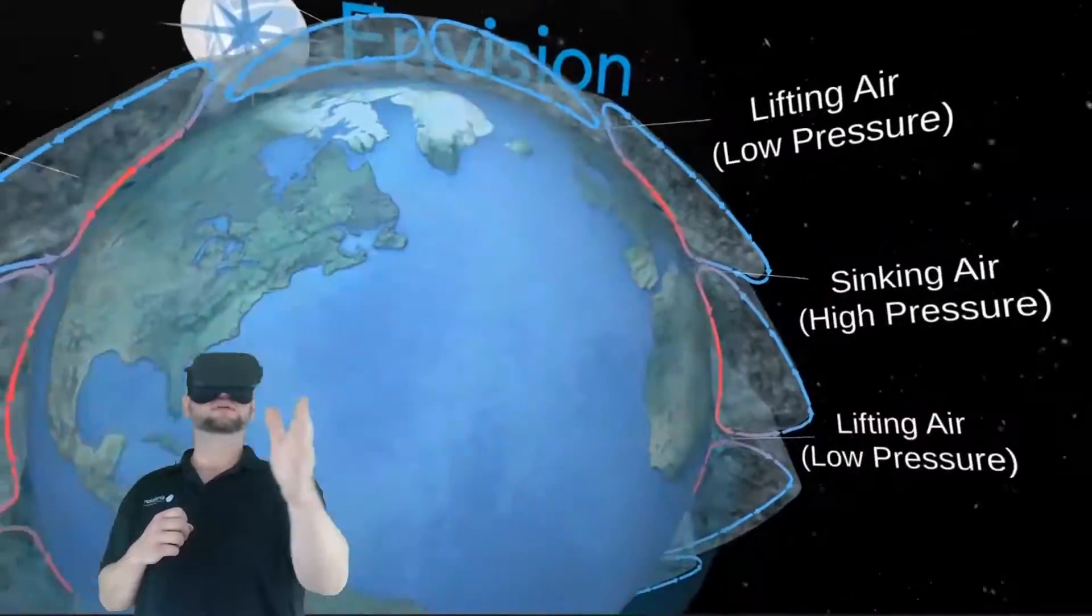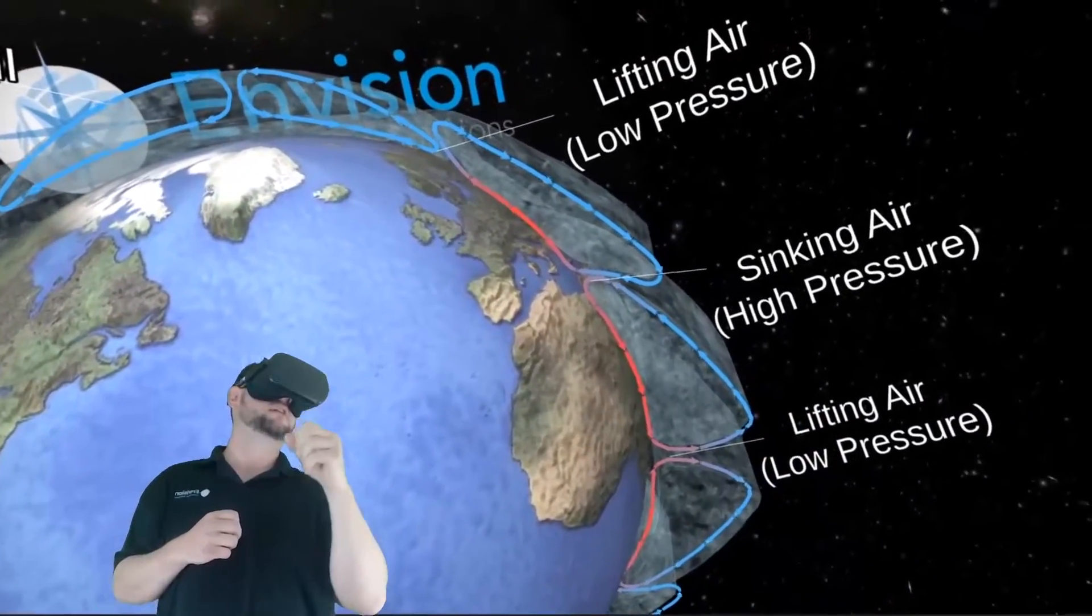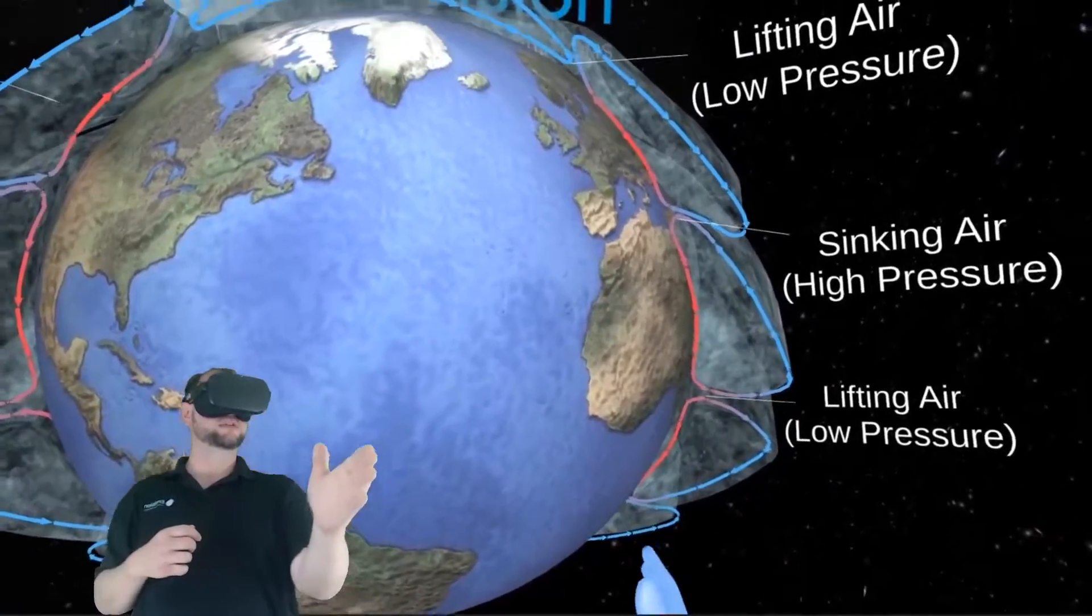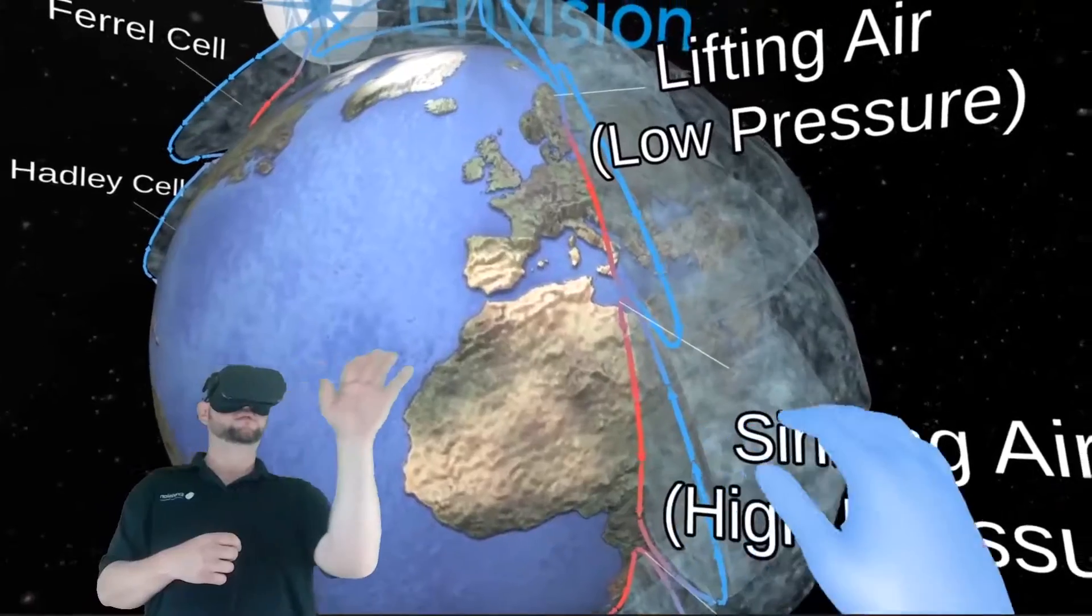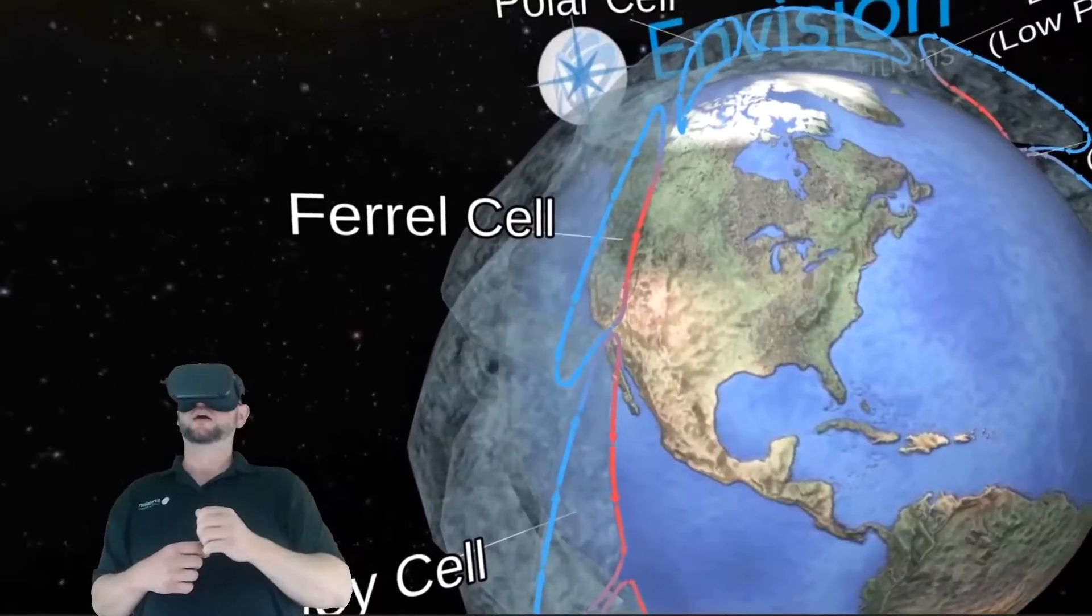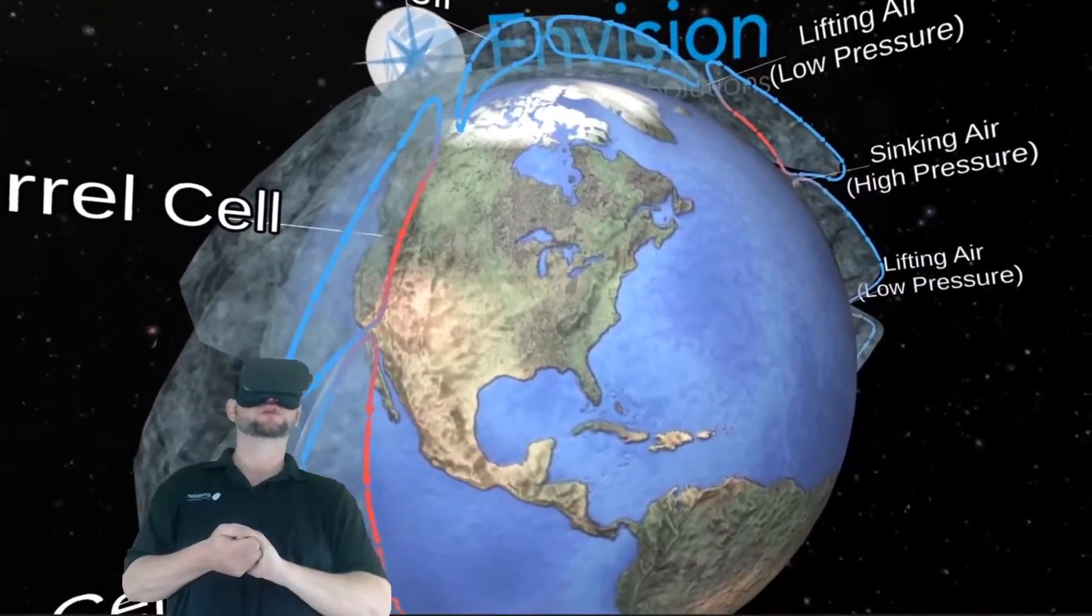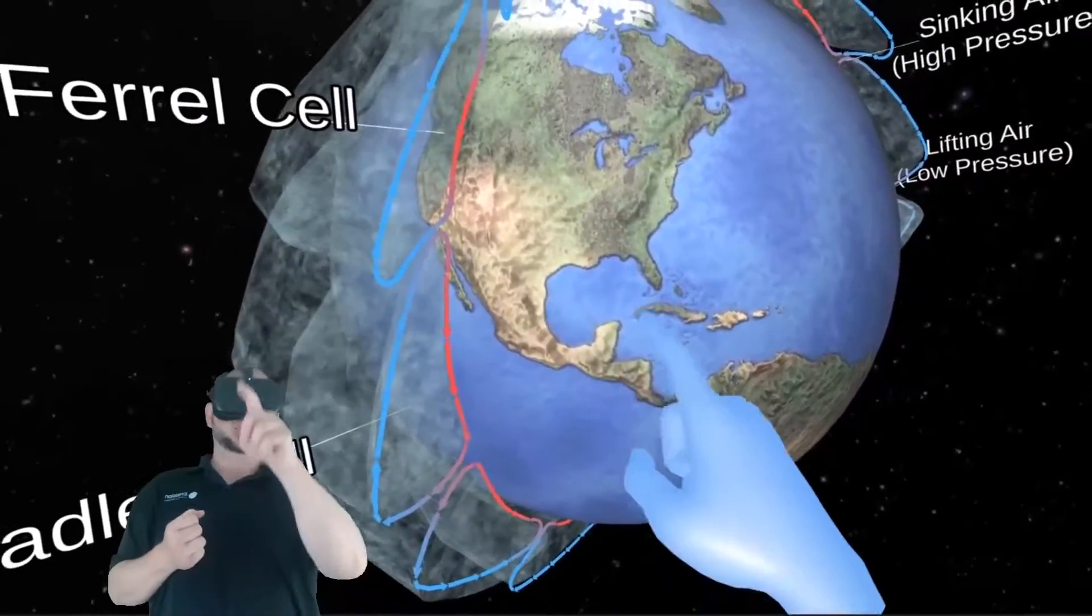And what you have is sinking air between the ferrel and Hadley cell. And that downward sinking air creates very dry conditions. And that's why we see the deserts along this similar latitude on the planet through the Sahara into the Middle East and then in the southwest US. The reason why the southeast US is not a desert region is from the moisture impact and influence from the Gulf of Mexico.